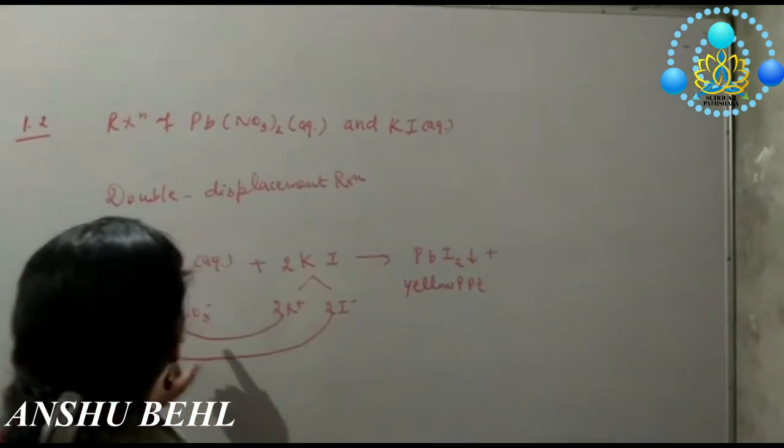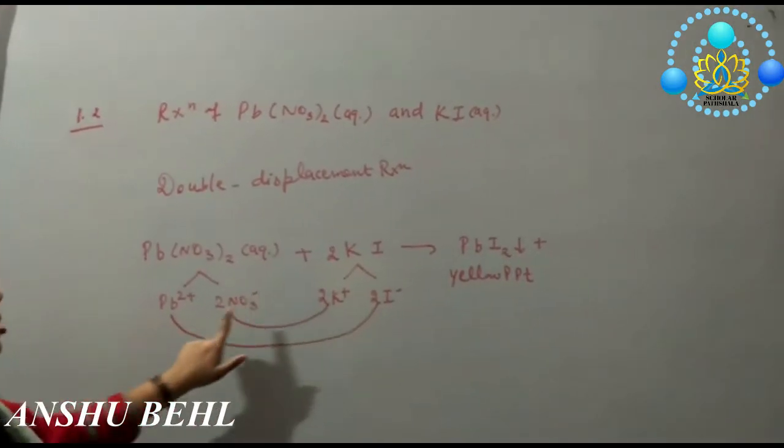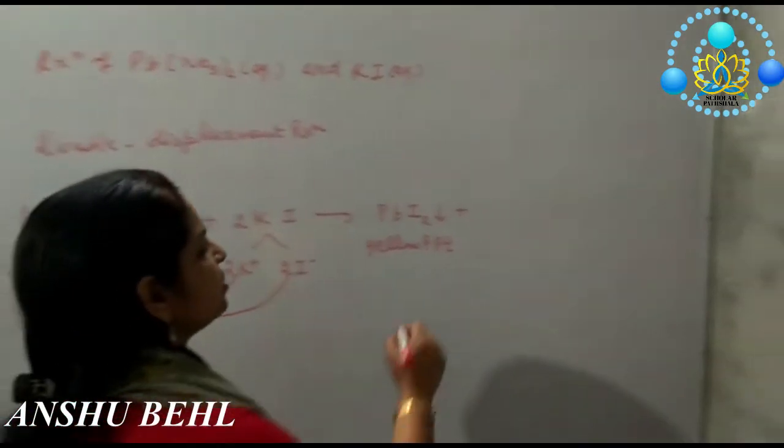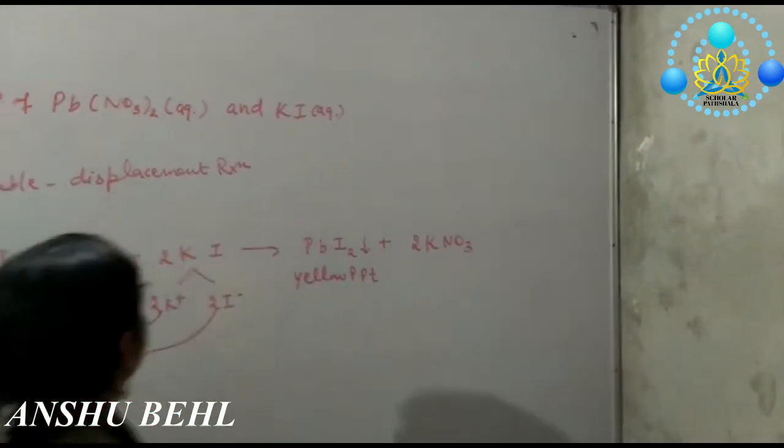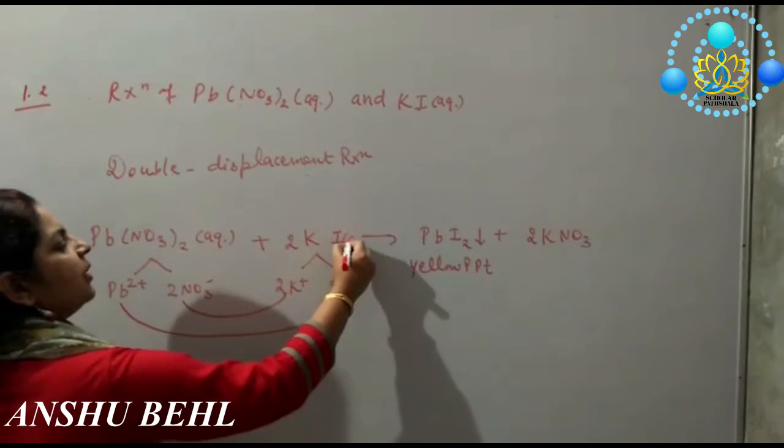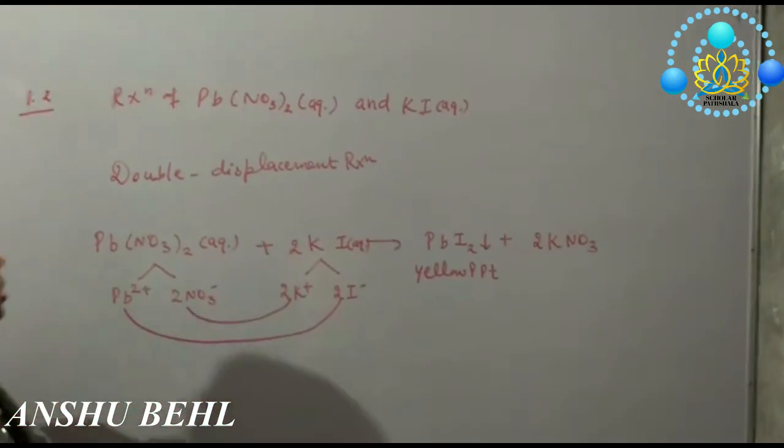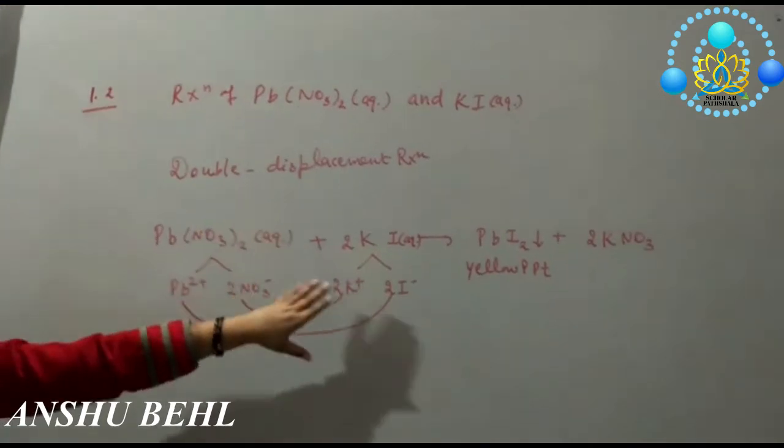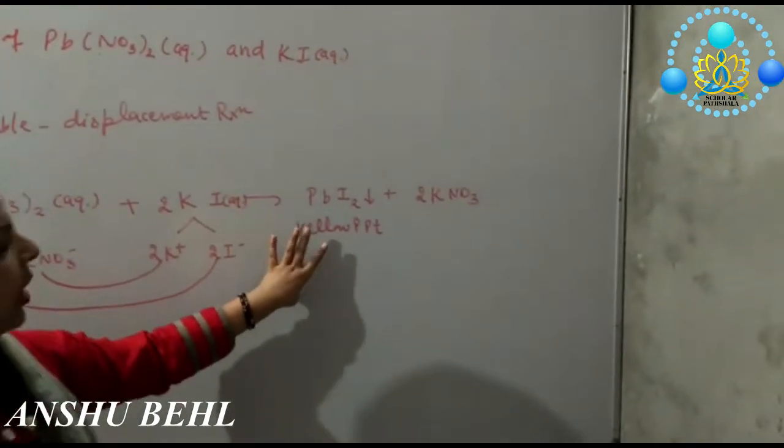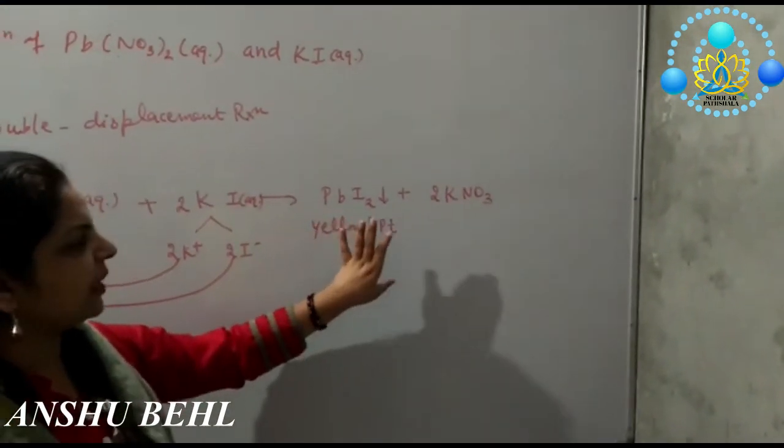Remaining behind are two potassium and two nitrate ions which will combine to form two potassium nitrate molecules. So you have taken aqueous solution of lead nitrate and potassium iodide. They will combine with each other to form lead iodide which will yield yellow precipitates.